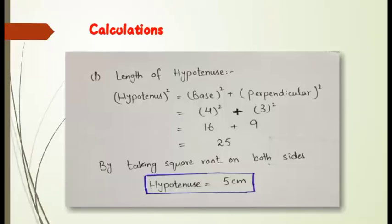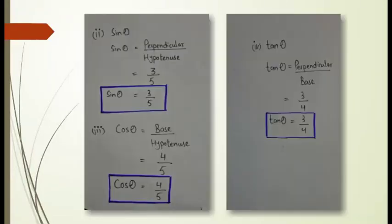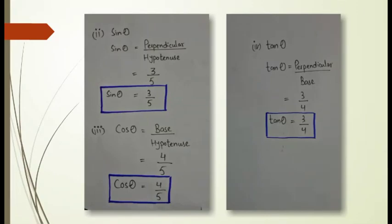Now find sin theta, cos theta, and tan theta. Sin theta = perpendicular / hypotenuse = 3/5. Cos theta = base / hypotenuse = 4/5. Tan theta = perpendicular / base = 3/4. These are the final answers.